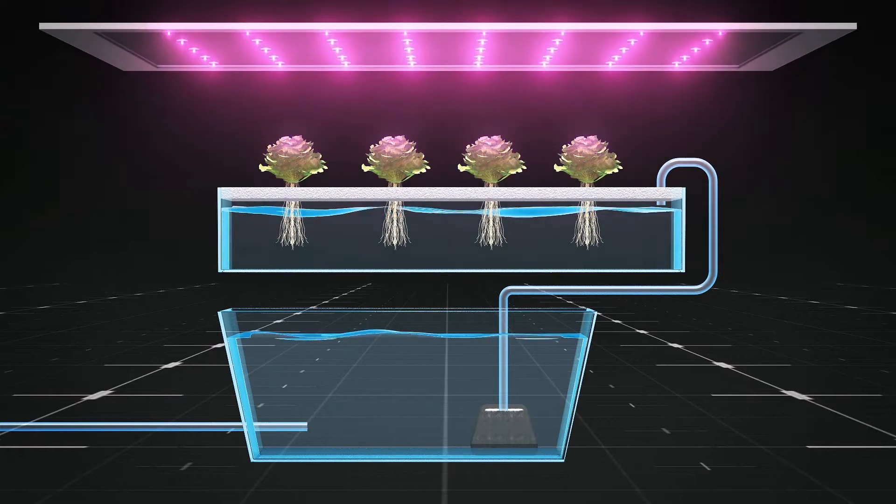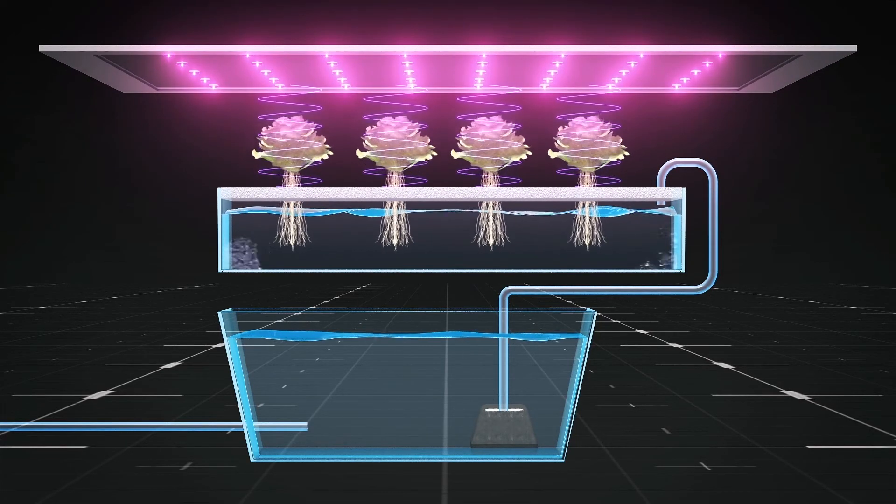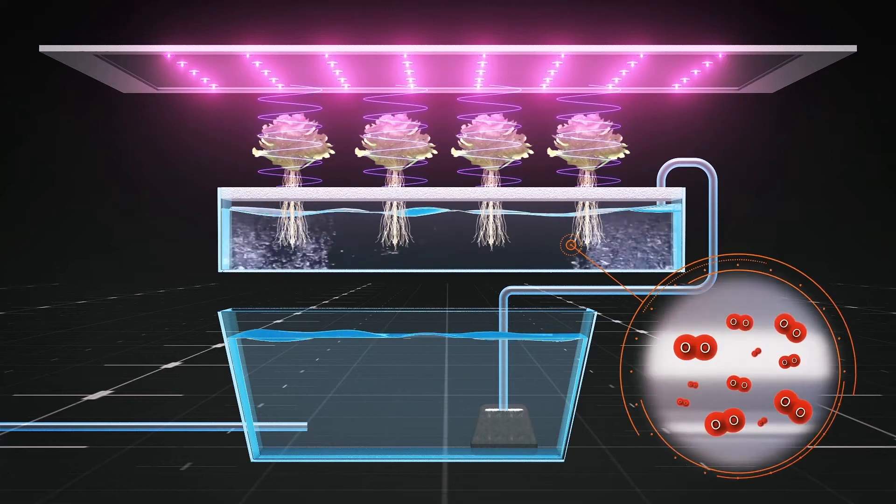Thousands of LED lights simulate sunlight to drive plant growth. Nanobubble hydroponics technology efficiently oxygenates the roots of the plants.